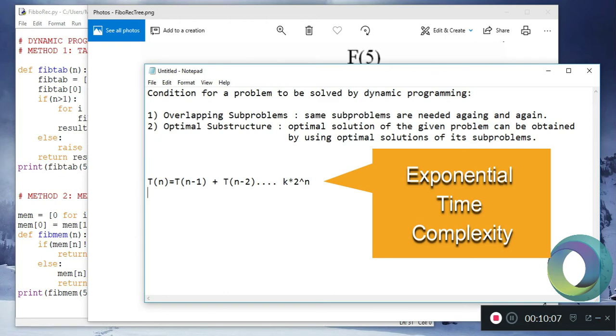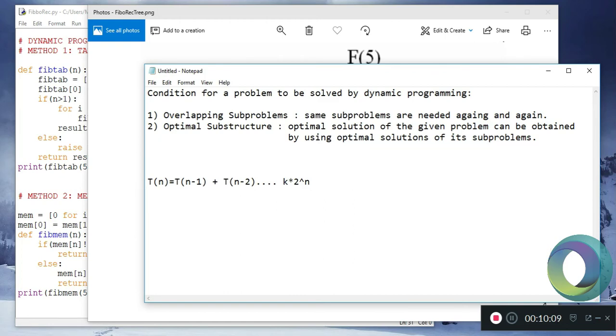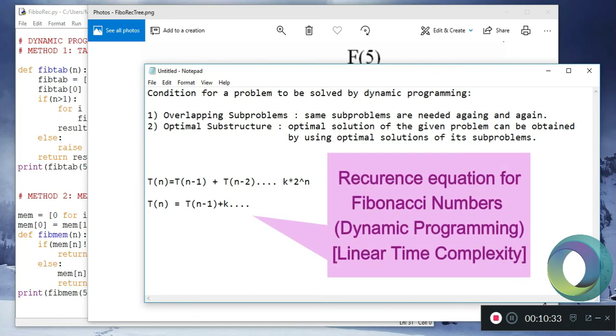In case of dynamic programming we see that since no computation is repeated, for the number n, n computations need to be carried out. The recurrence equation for this solves to constant multiplied by n. This has linear time complexity.